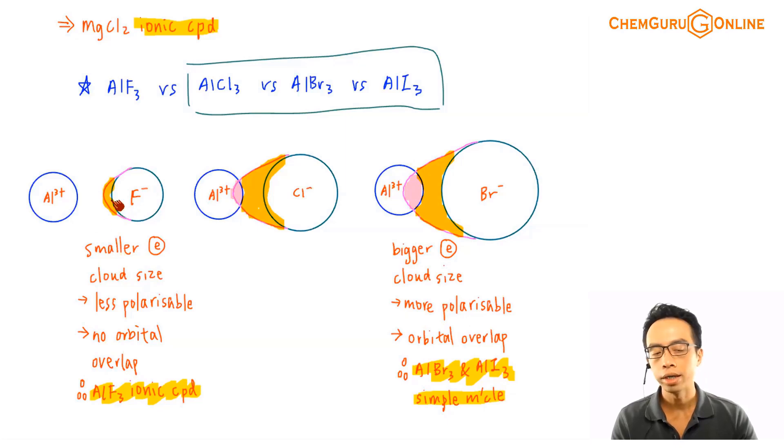Now how about Fluoride? Aluminum Fluoride. We know that F- is smaller, less polarizable. So now the issue is, I know that it is less polarizable, not so easy to pull the electron cloud, but what is the extent of it? Does it mean that if it is less polarizable, less distortion of electron cloud, there's no orbital overlap? So we can't really tell.